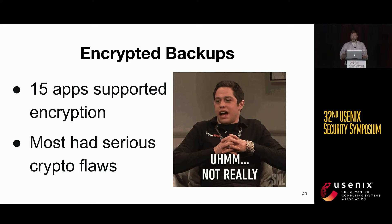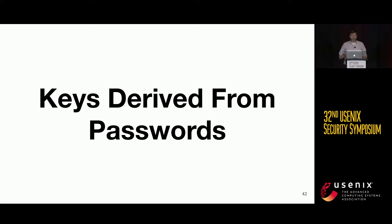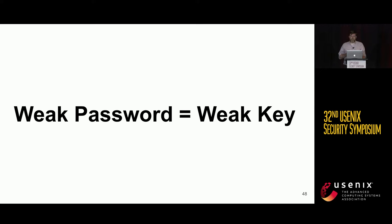There were 15 apps that supported encryption for backups, but most had serious cryptographic flaws that made the ciphertexts vulnerable to trivial offline attacks. Fourteen of the 15 apps that supported encryption derived an encryption key from a user-chosen backup password. Microsoft Authenticator was the second most installed app we reviewed and a unique case — it was the only app to create encrypted backups without deriving keys from a user-chosen password; instead it retrieved a randomly generated key from a Microsoft-controlled key server. For the rest, a weak password that can be easily guessed results in a weak key and contributes to offline attacks.